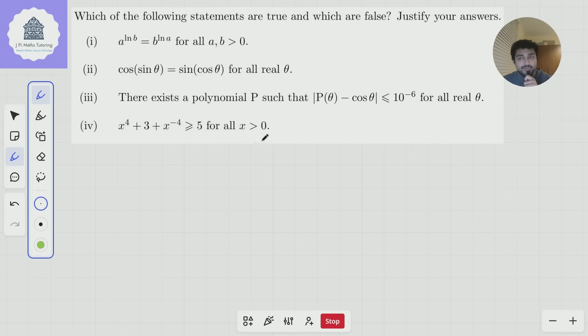Which of the following statements are true and which are false? Justify your answers. Statement 1: a^(ln b) = b^(ln a) for all a, b > 0.